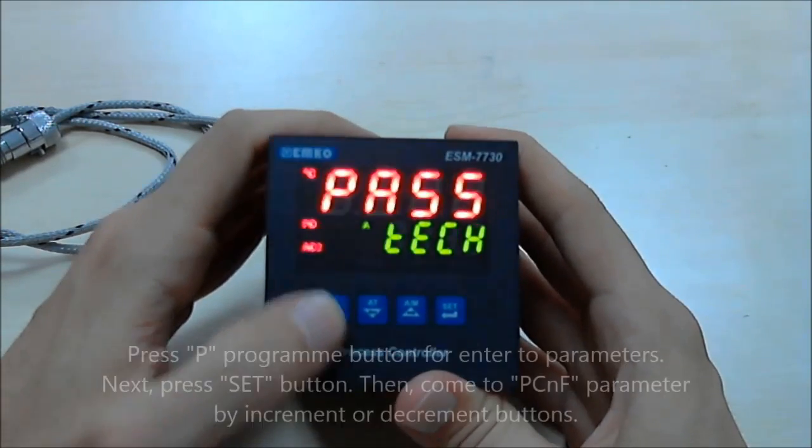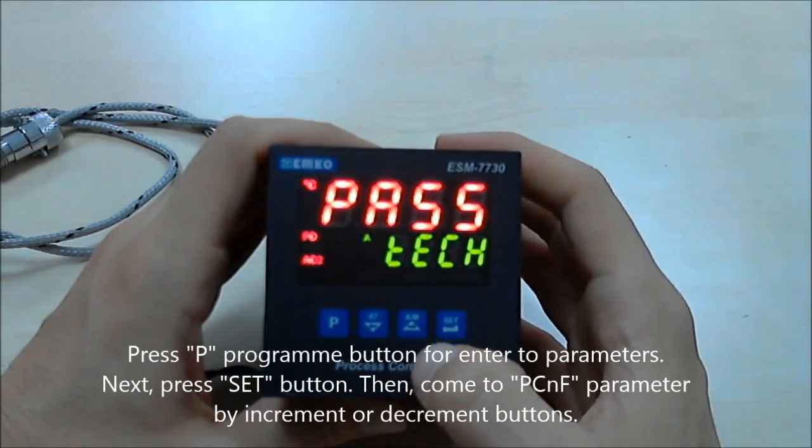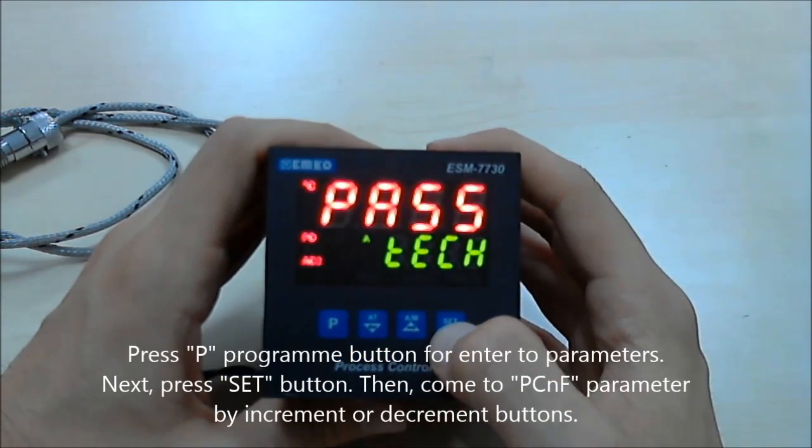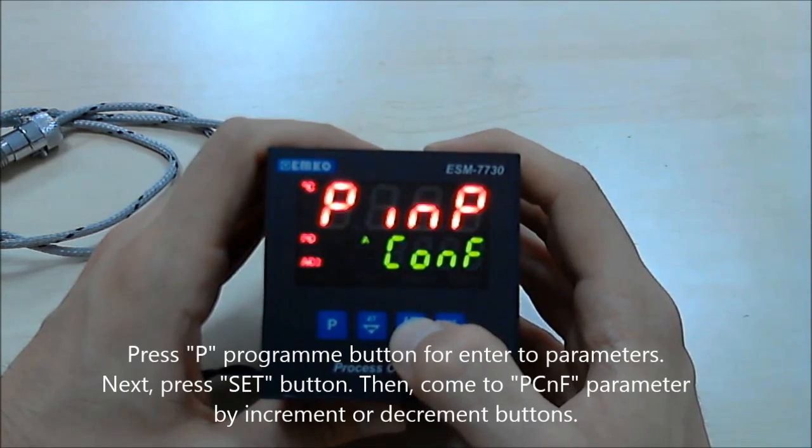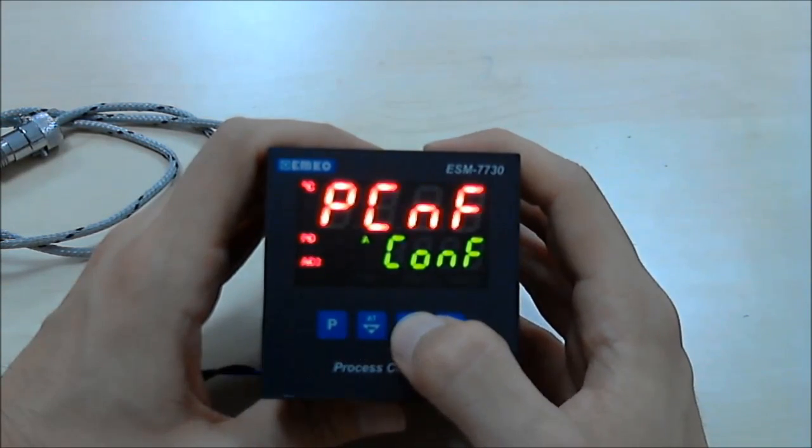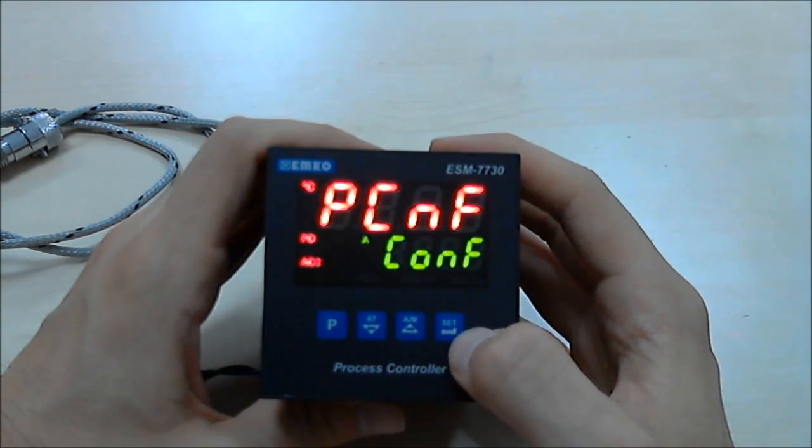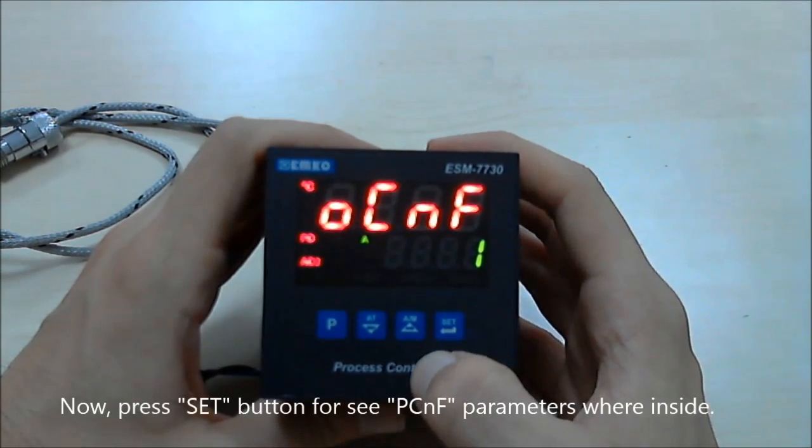Press program button and press set button by increment and decrement buttons. Come to the P configuration parameter and press set button.